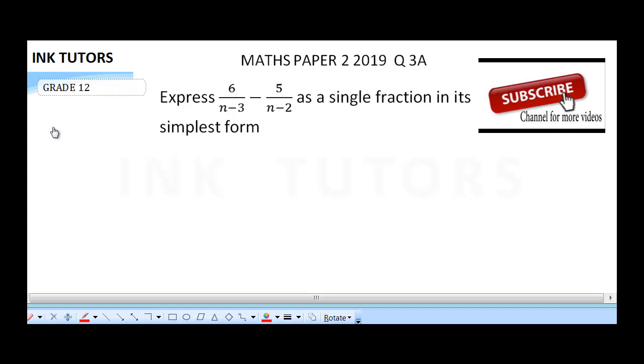This is paper 2, question 3a. The question says express the fraction 6 over n minus 3 minus 5 over n minus 2 as a single fraction in its simplest form.